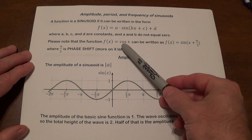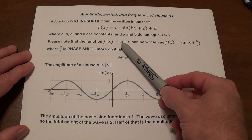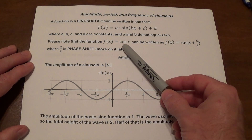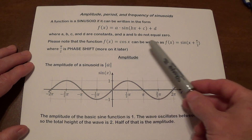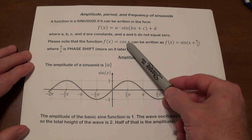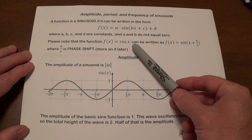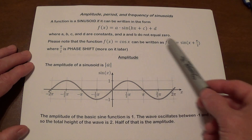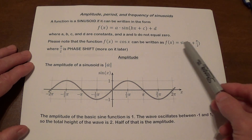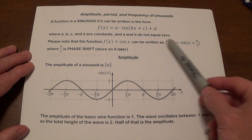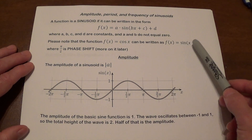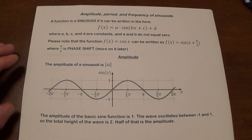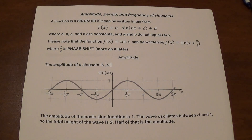We call them sinusoids, but it can also be a cosine function, because the graph of the cosine function is going to be different from the graph of the sine function by a horizontal shift. You can write cosine x as sine of x plus pi over 2, and pi over 2 will be a phase shift, which we'll talk about later.